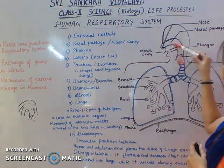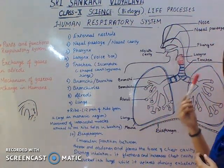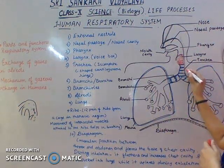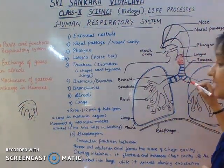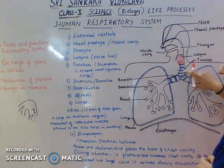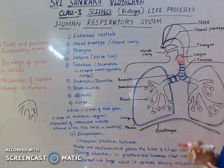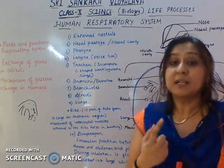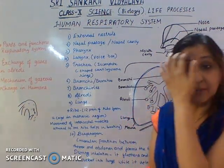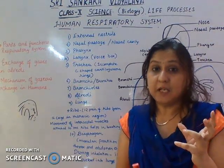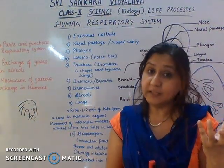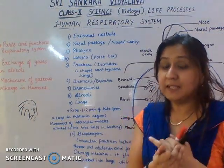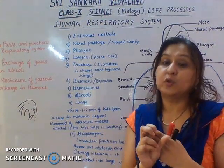Next, the air reaches the trachea. The trachea is covered with ring-like cartilages — incomplete C-shaped cartilaginous rings. A common exam question is: why is the trachea surrounded by these incomplete C-shaped cartilaginous rings? The cartilaginous rings serve two purposes: first, they prevent the trachea from collapsing; second, they help keep it open.